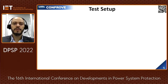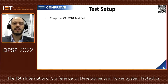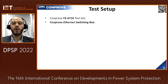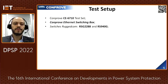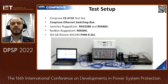To verify the behavior of each redundancy protocol on the process bus in a protection case study, a test setup was performed consisting of the test set C6710, an electronic switch to implement the contingencies by opening the communication paths, Ethernet switches, a red box, and a protection IED GEP446, as shown in the figure below.